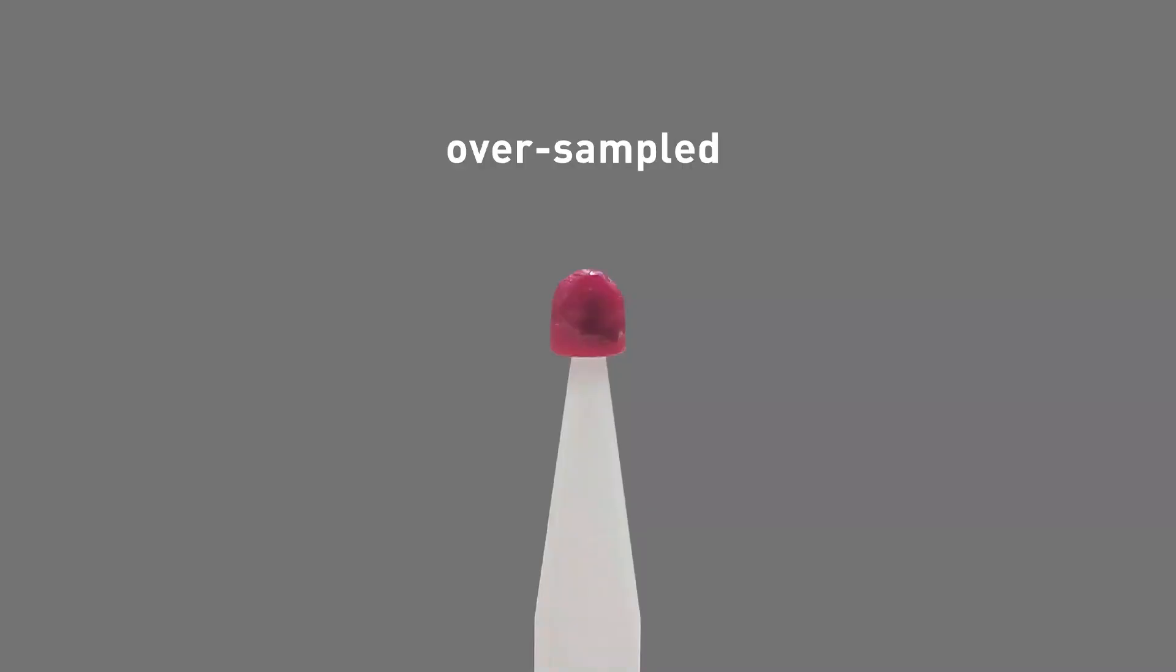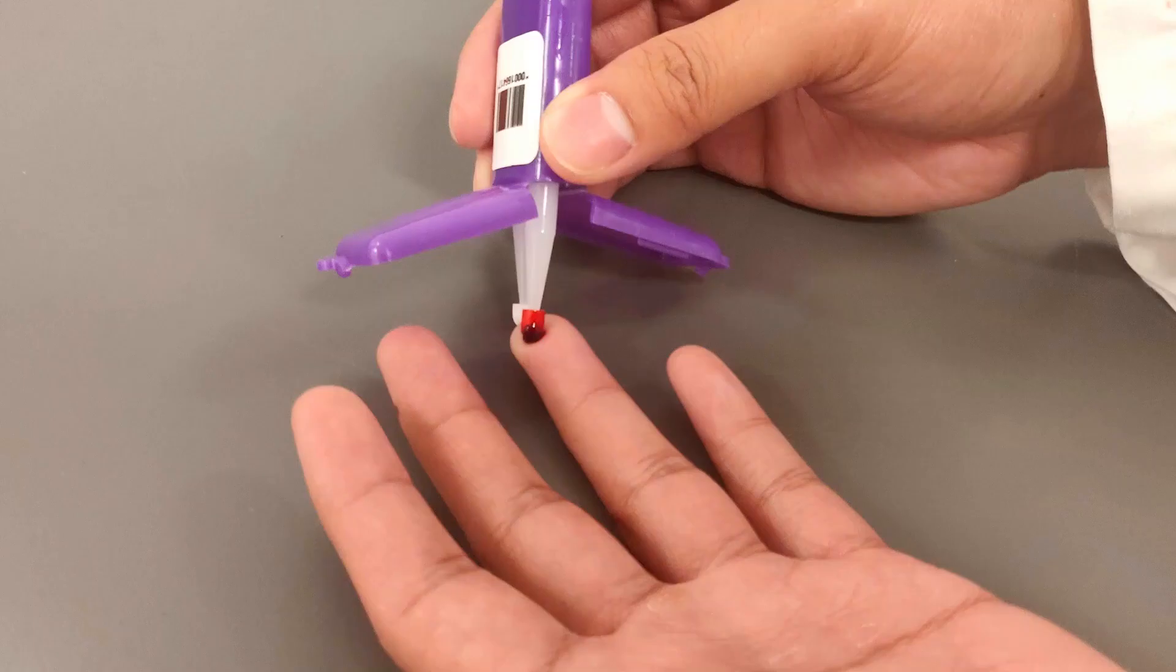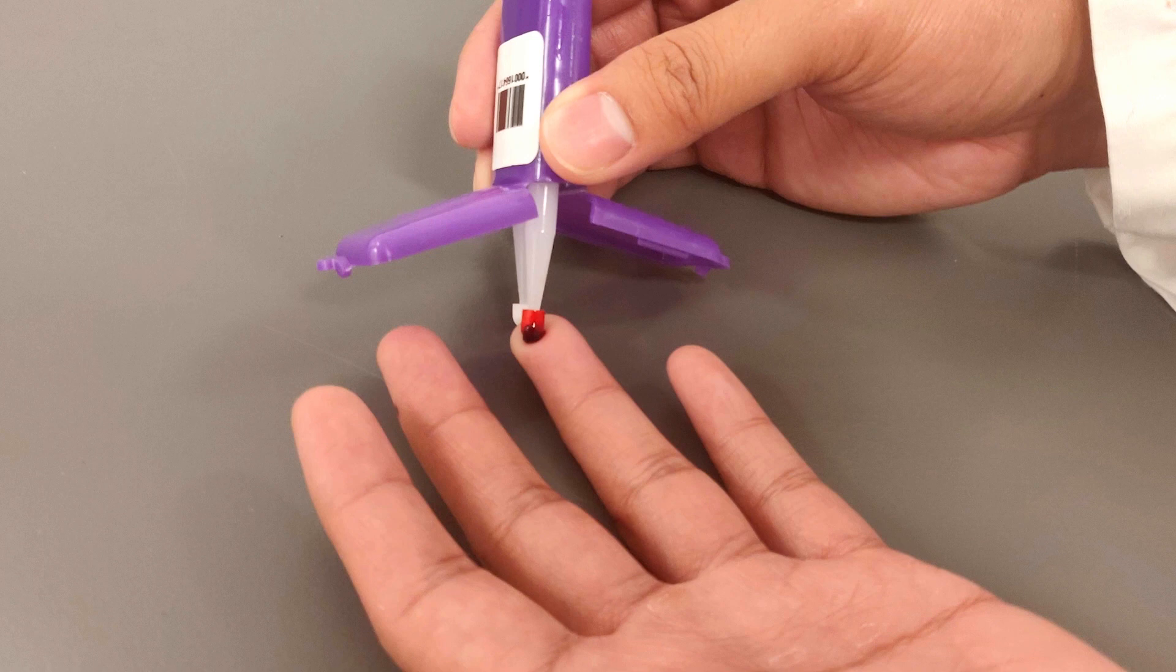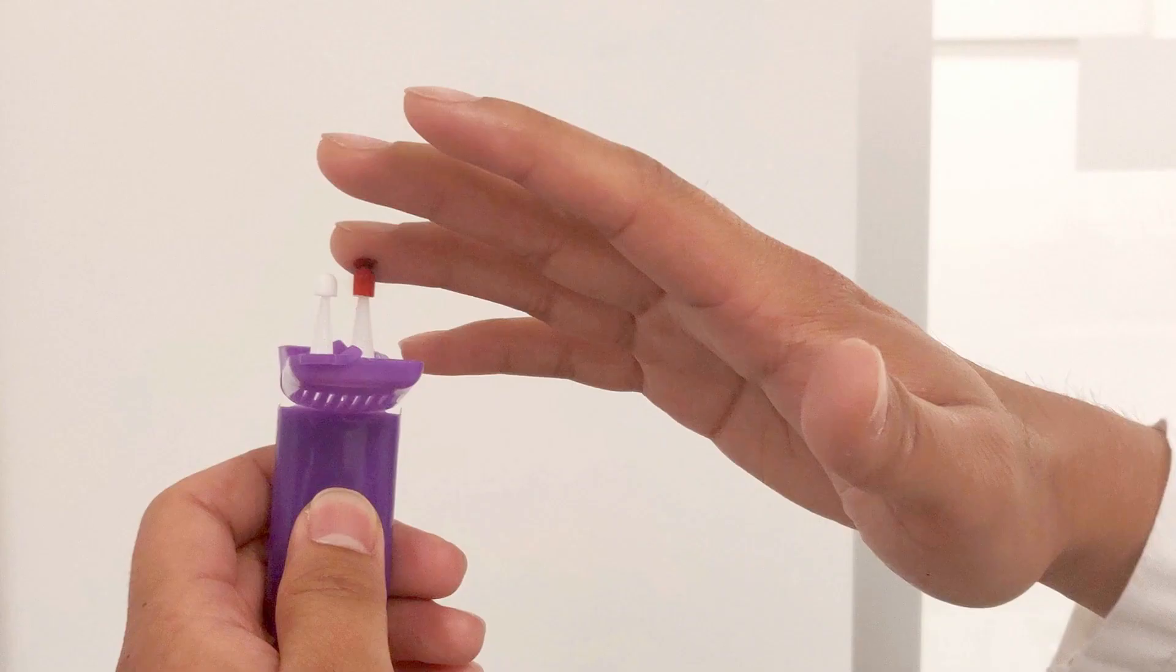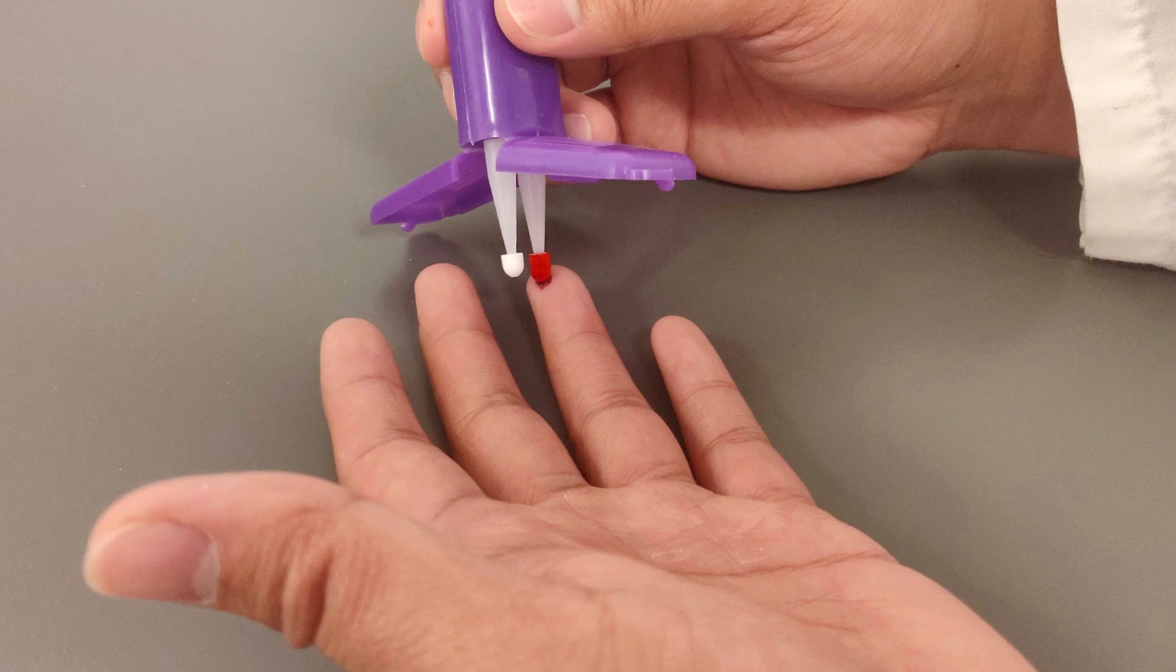If there's too much blood, that can result in over-sampling. Over-sampling is usually caused by three issues. One, the tip is fully submerged in the blood. You want to keep it on the surface of the blood. Two, blood is dripped onto the sampling tip. Three, the tip points upwards towards the sky when it touches the blood. It should point downward towards the floor.